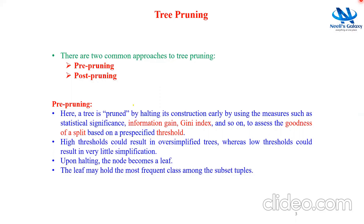But here is a problem: a high threshold could result in oversimplified trees, whereas a low threshold could result in very little simplification. Finally, upon halting, the particular node becomes a leaf node. The leaf node may hold the most frequent class among the subset of the tuples.